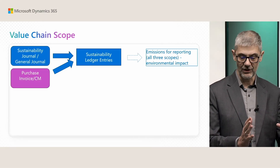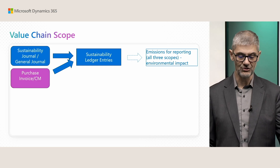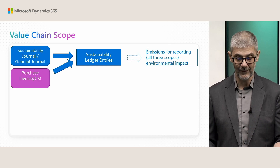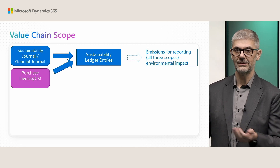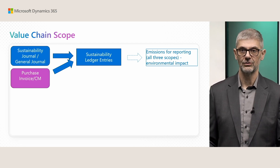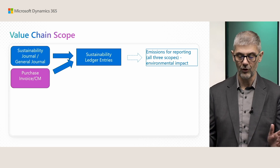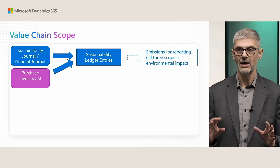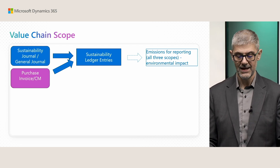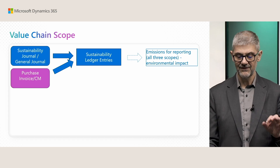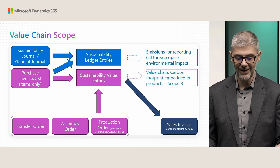Previously, related to sustainability, you could use the sustainability journal — from the general journal as well — or from the previous wave, purchase invoice or credit memo, to enter information into sustainability ledger entries so you can use emissions for reporting all scopes about environmental impact. This is for official reporting such as CSRD and other rules. Now with the new feature, we have added an additional scope: sustainability value entries.